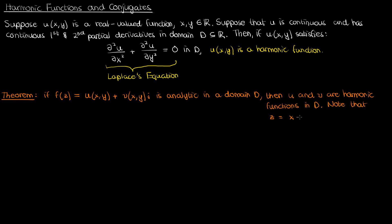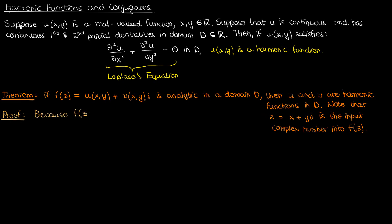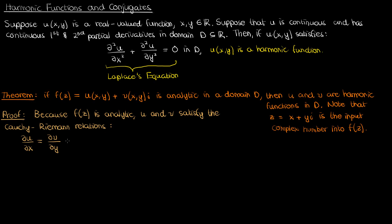Note that z here is your generic complex number given by the sum of x and y times i, and i is your usual imaginary number, i squared equals negative 1. The proof of this theorem is actually trivial. If you recall from earlier videos on complex variables, if f of z is an analytic function, the real and imaginary parts of f of z — the u and the v — must satisfy the Cauchy-Riemann relations given by the following equations, which I'll label equations 1 and 2.